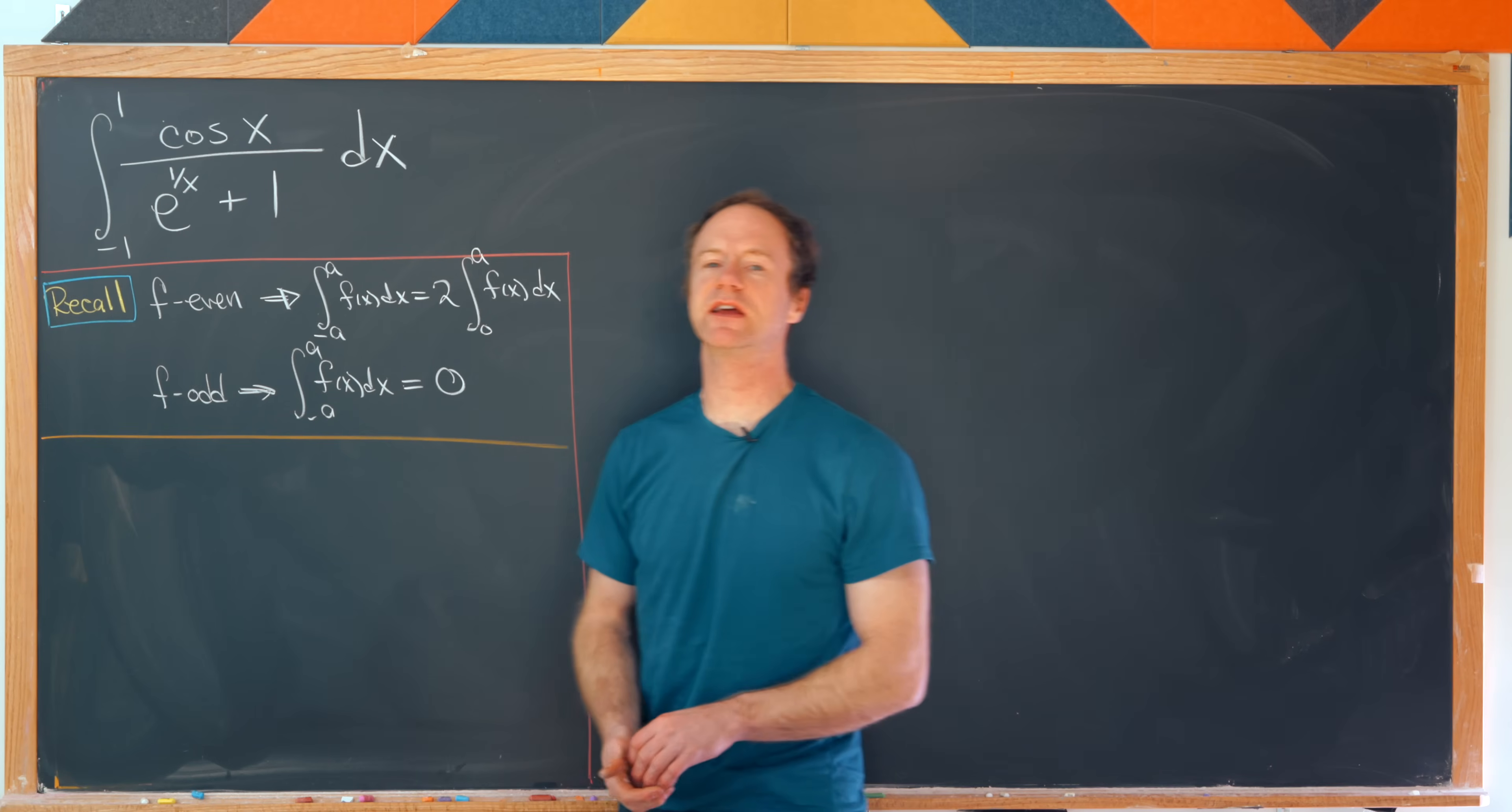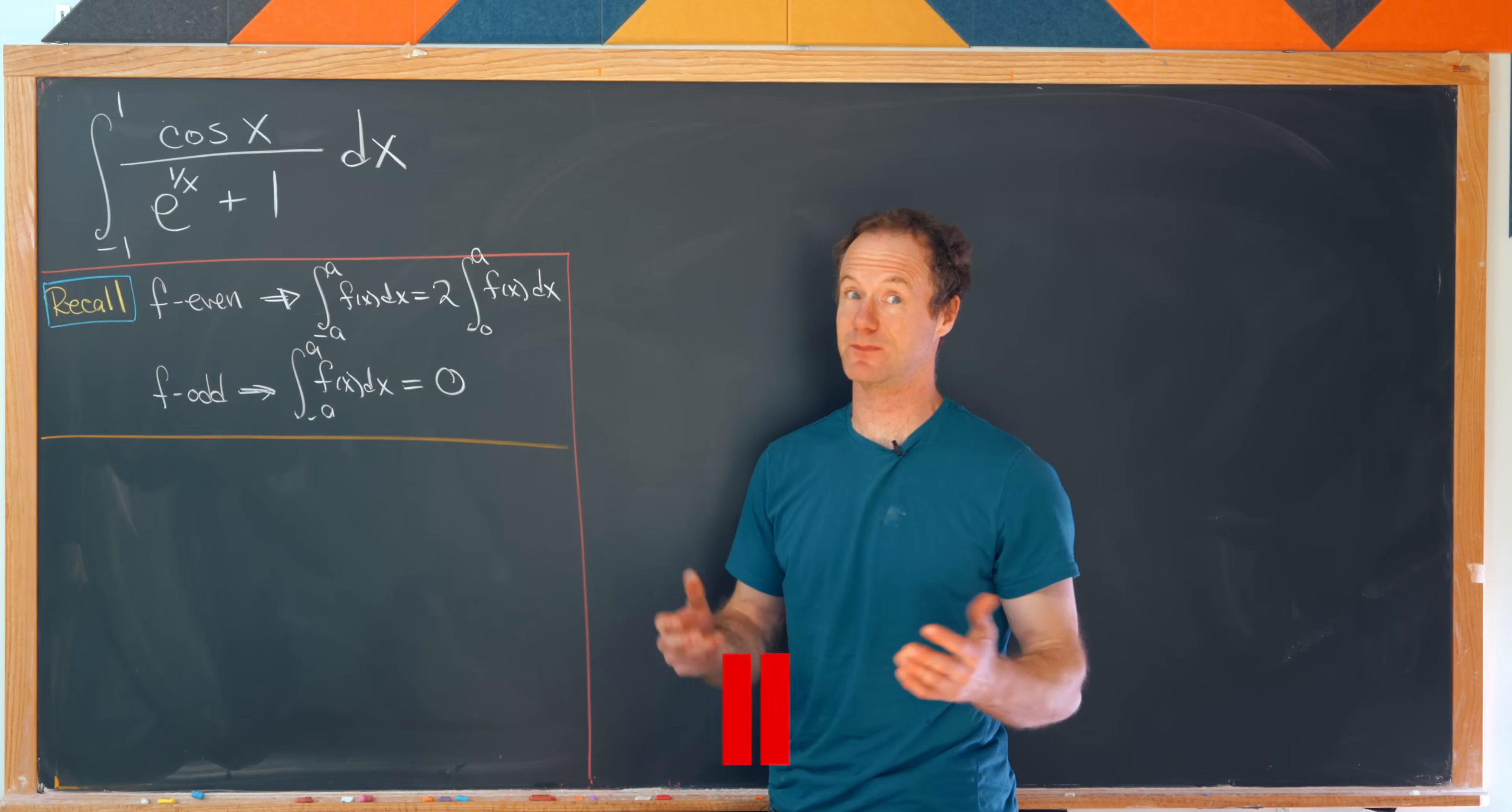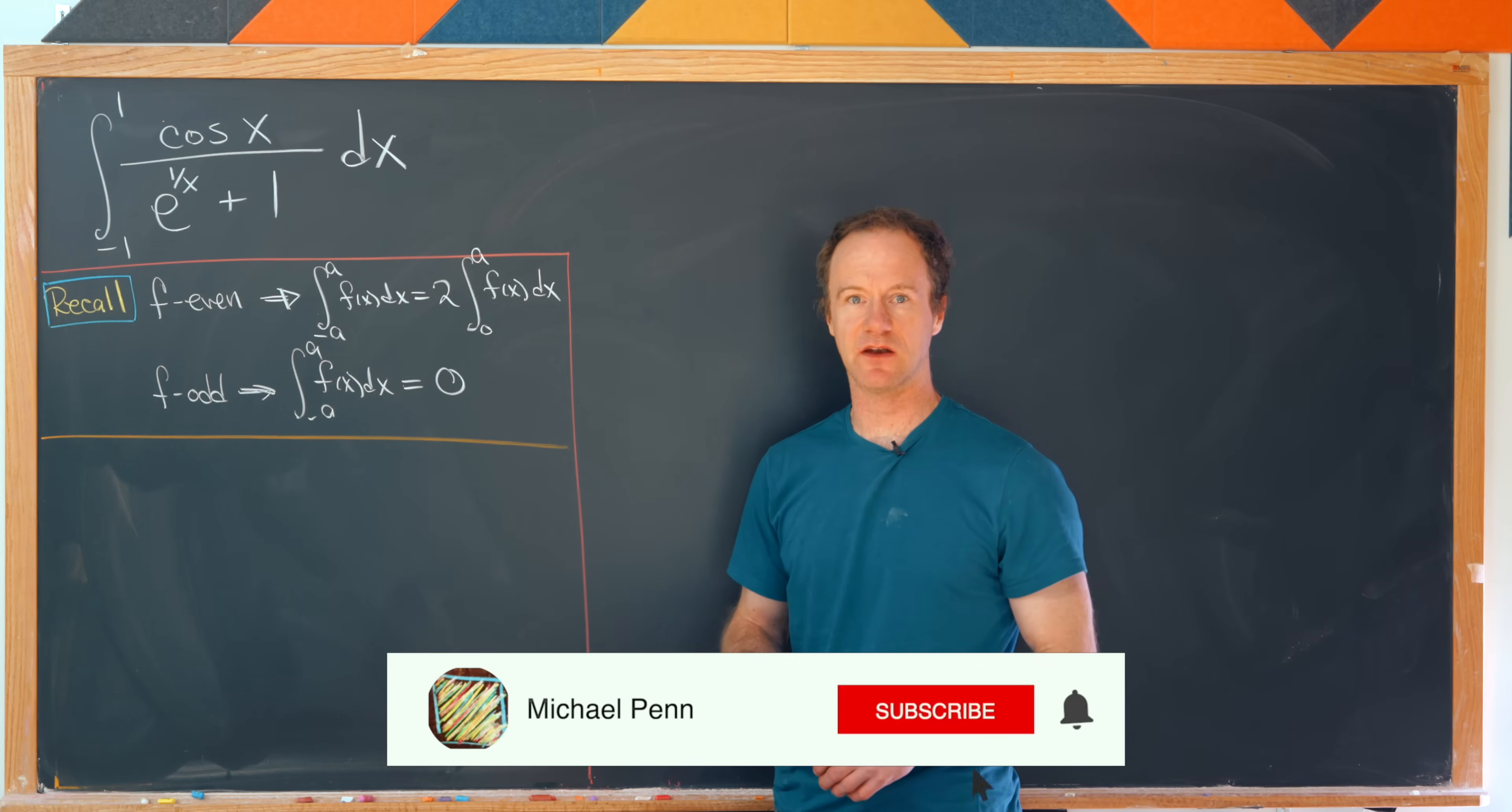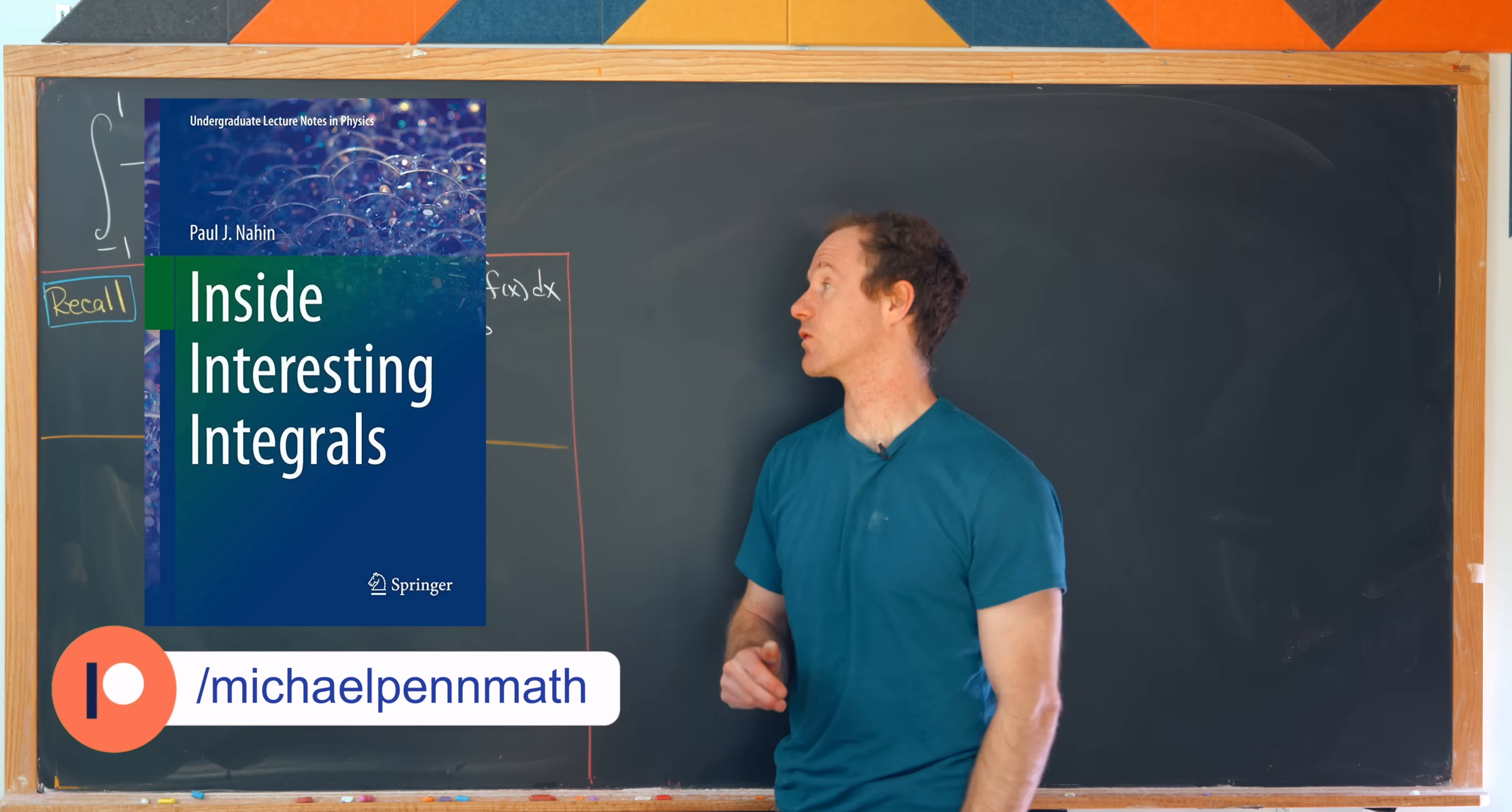Today, we're going to look at a really interesting integration trick, which takes an integral that looks really impossible and finds the value of it fairly quickly. And this example is from the book Inside Interesting Integrals by Paul Nahim. I urge you to check this book out if you're interested in this kind of stuff. It's really great.